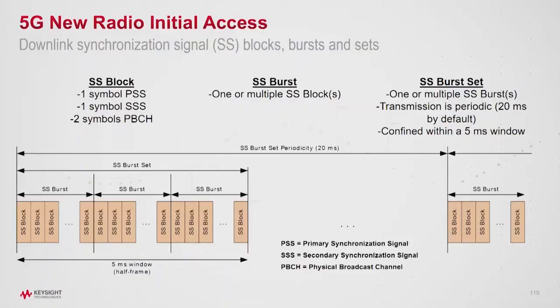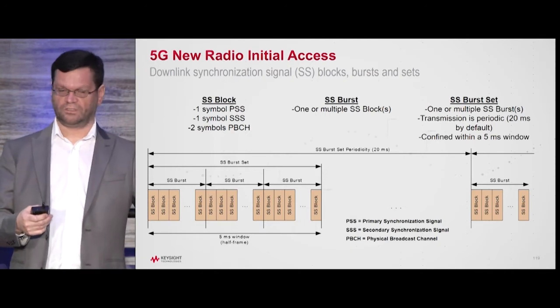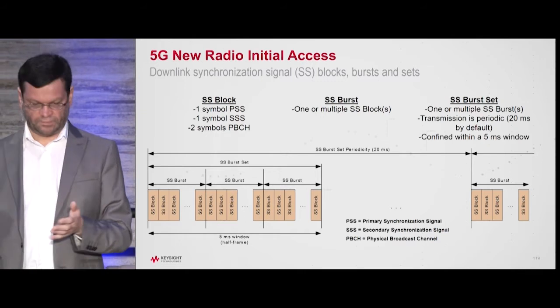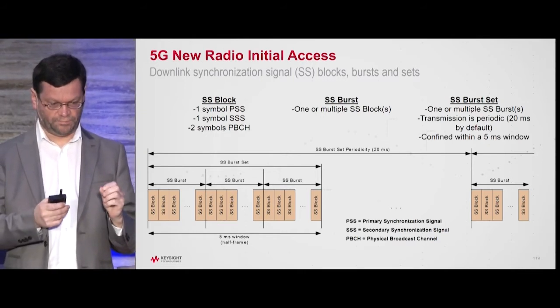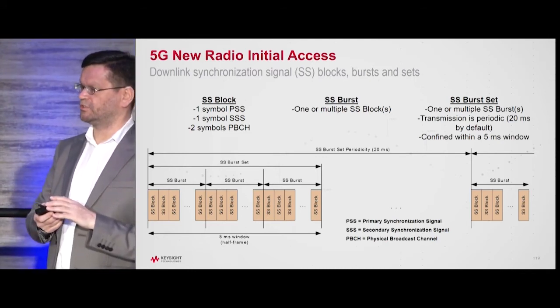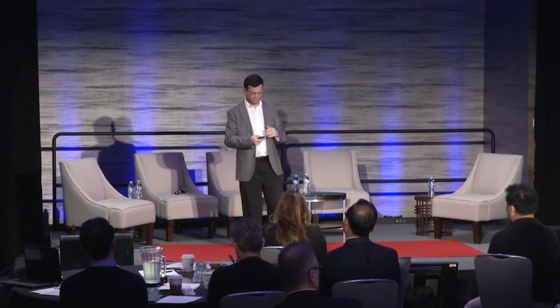What it looks like at the physical layer is the base station is going to, instead of just transmitting the synchronization signals everywhere in a sector — 120 degrees — and the mobile just sits there and listens and says okay, that looks okay. Because of the directionality, it's now possible at FR2 for the base station to send out 64 different synchronization signals in different directions. It does that in a burst of 5 milliseconds, and that burst can be repeated every 20 milliseconds as a default. That number can change, but that's the basics.